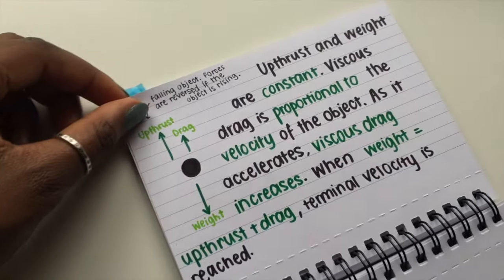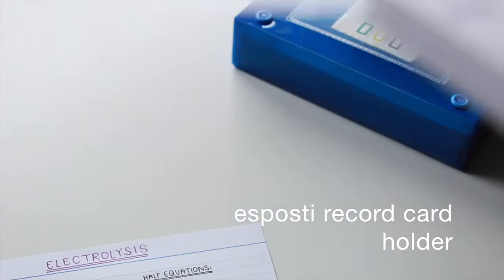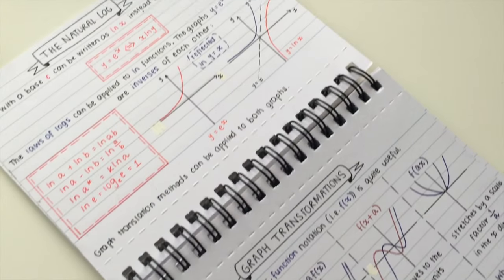So anyway, here you go, enjoy. To begin with, I would use regular 6x4 index cards and I would keep them in this plastic box which I will leave a link to in the description.